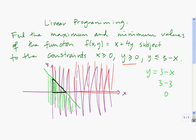The next thing that we need to do is find the coordinates of all of the vertices of the region. This point right here has the x-coordinate of 0, and it was the y-intercept of our line, so the y-coordinate is 3. That vertex has coordinates 0, 0. And finally, that point right there has coordinates 3, 0.